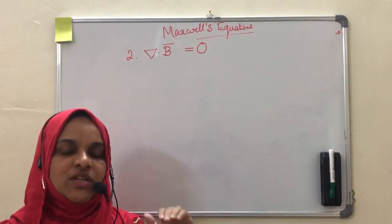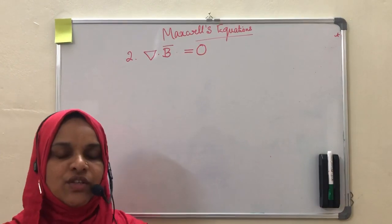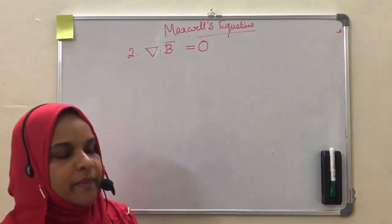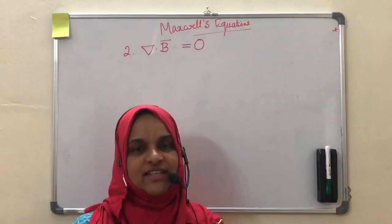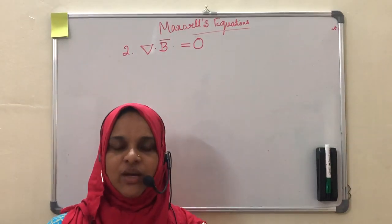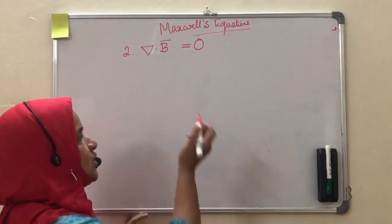This second Maxwell's equation was deduced from Gauss's law in magnetostatics. Do you remember Gauss's law in magnetostatics? The net magnetic flux through any closed surface is equal to 0.